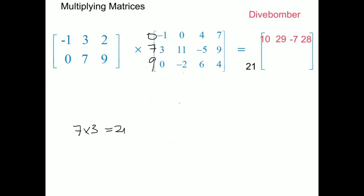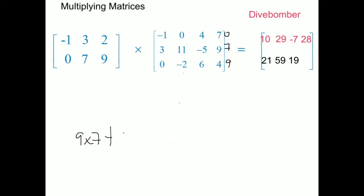The next two values for row 2 work out to be 59 and 19. For the last entry, row 2 column 4, we get 9 times 7 plus 4 times 9, which equals 99 — wait, 7 times 0 is 0, and 9 times 7 gives 63, plus contributions, equaling 99. The 99 ends up in the final spot of the answer matrix. That completes multiplying a 2 by 3 by a 3 by 4 matrix.